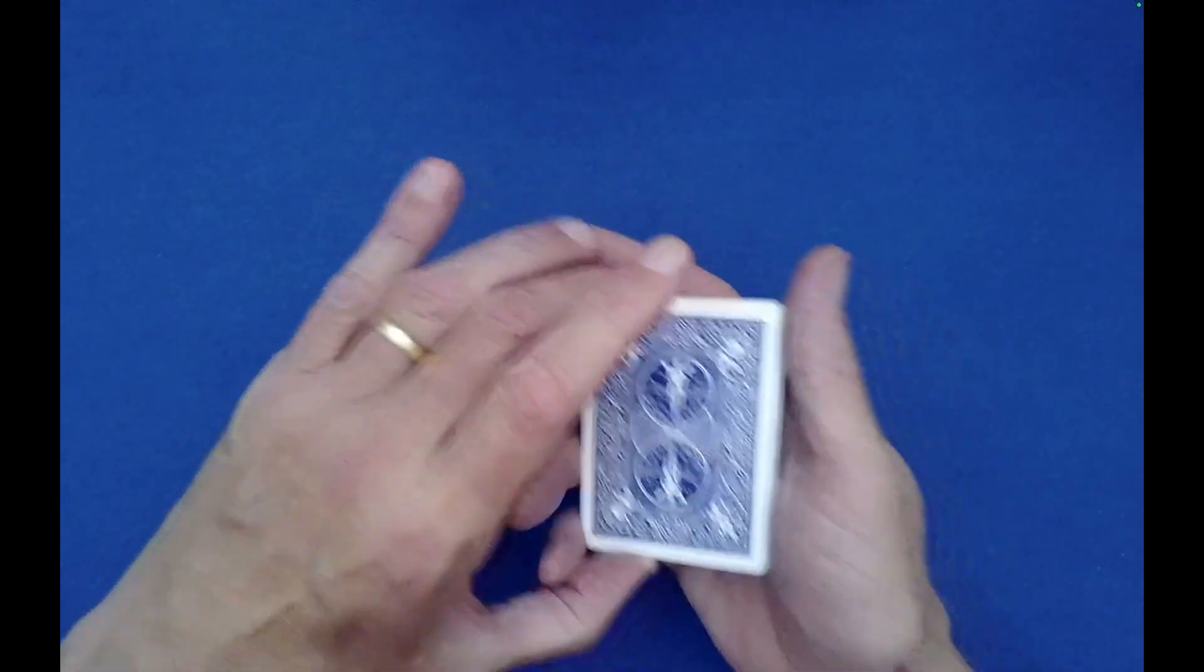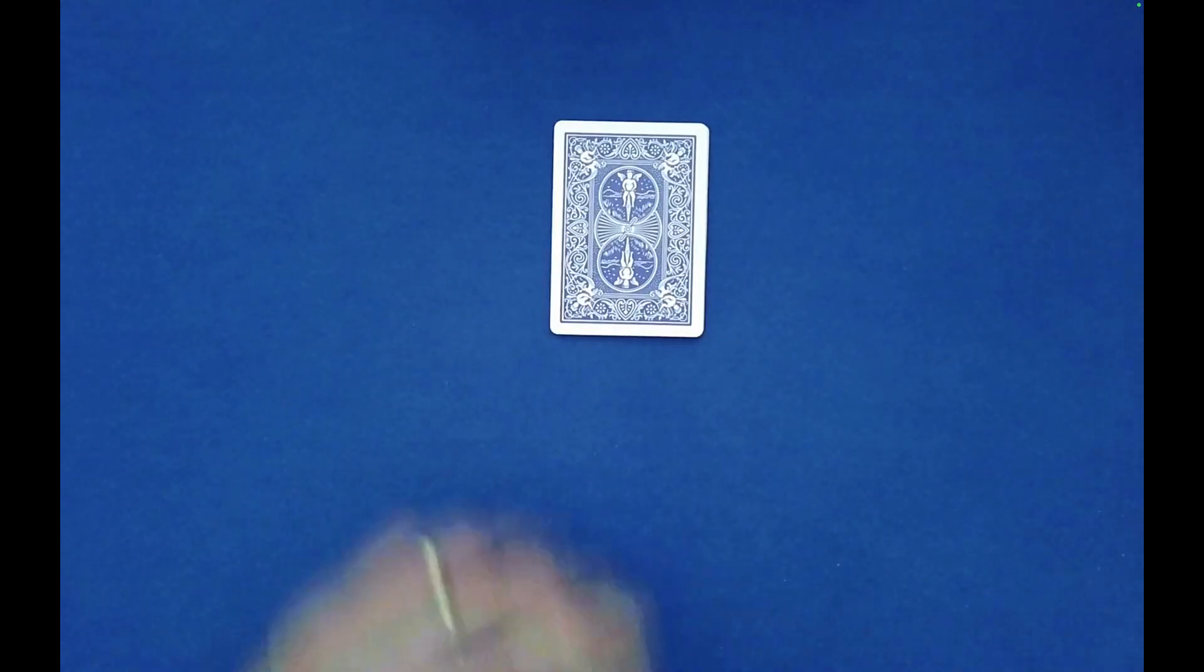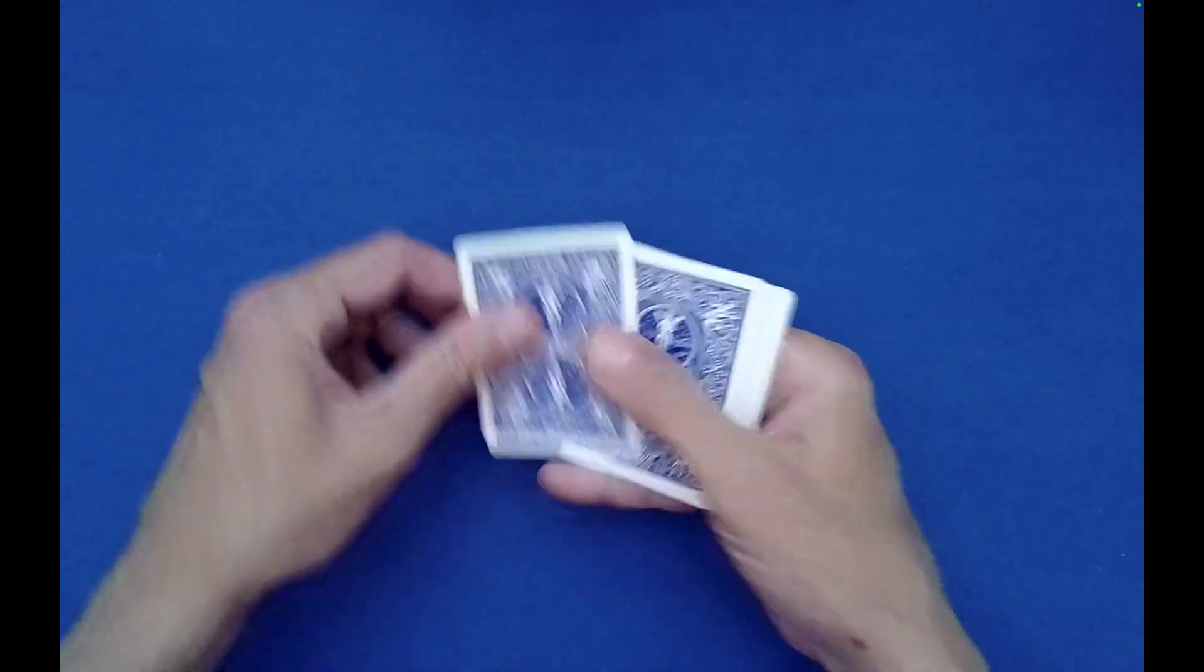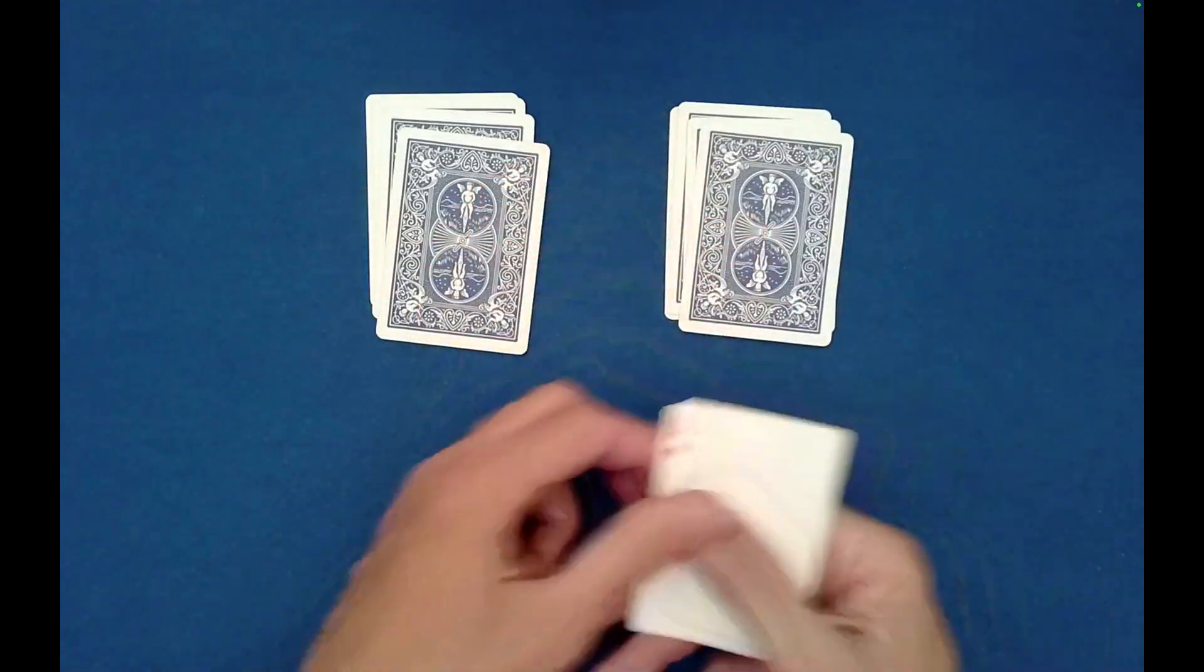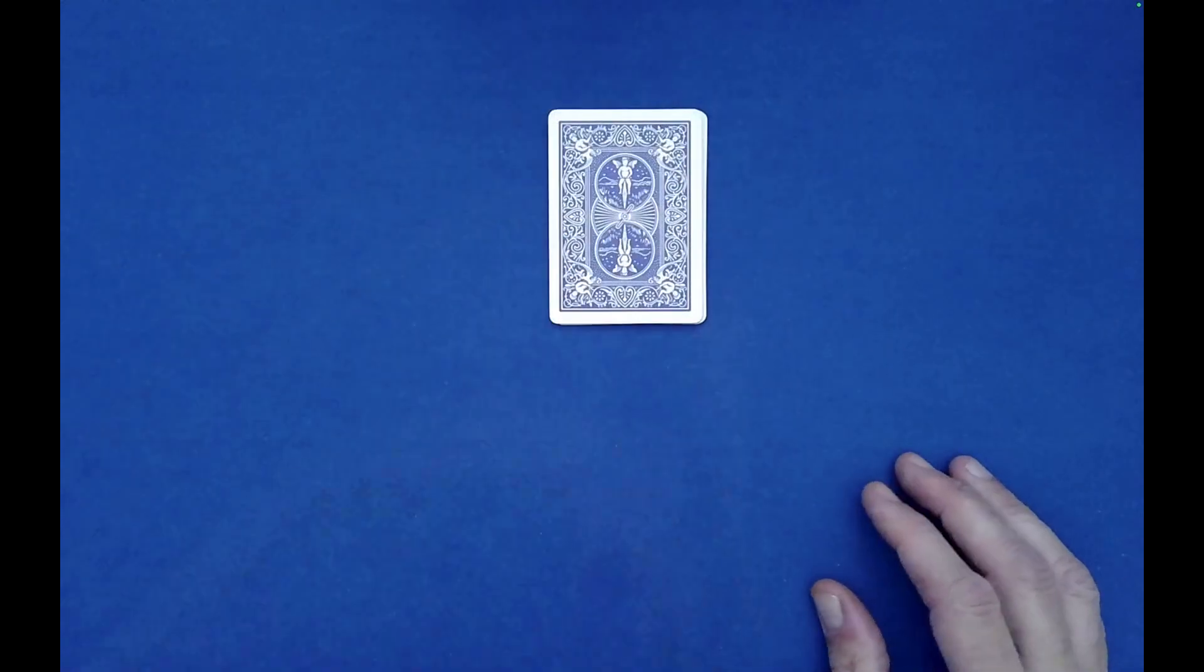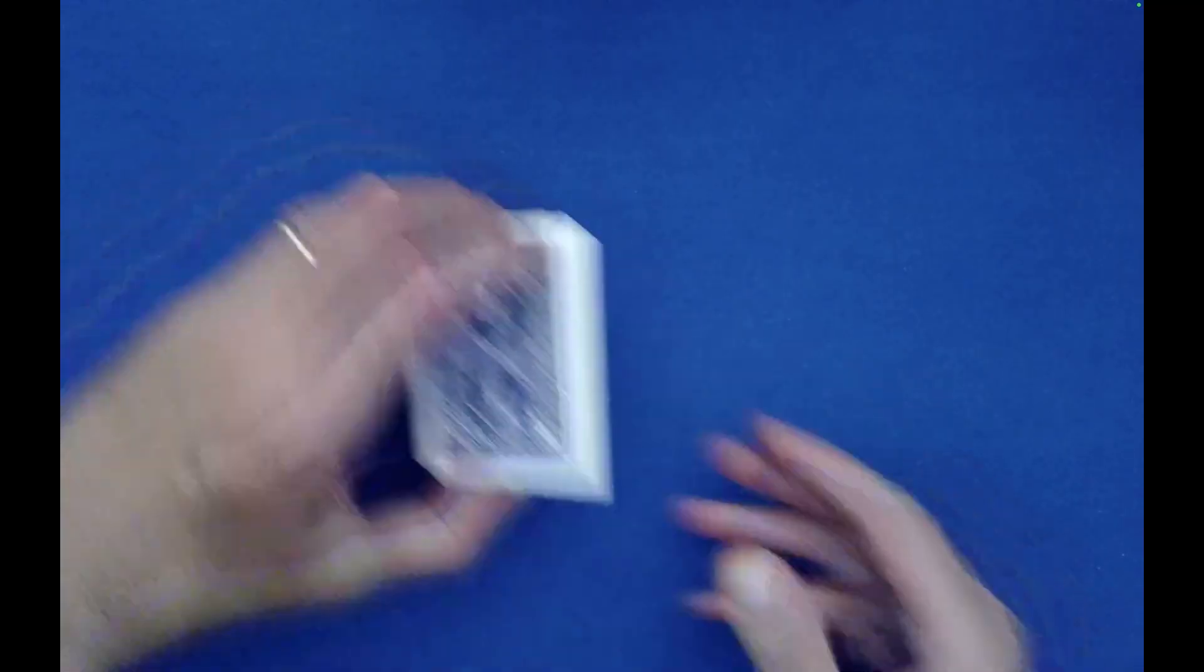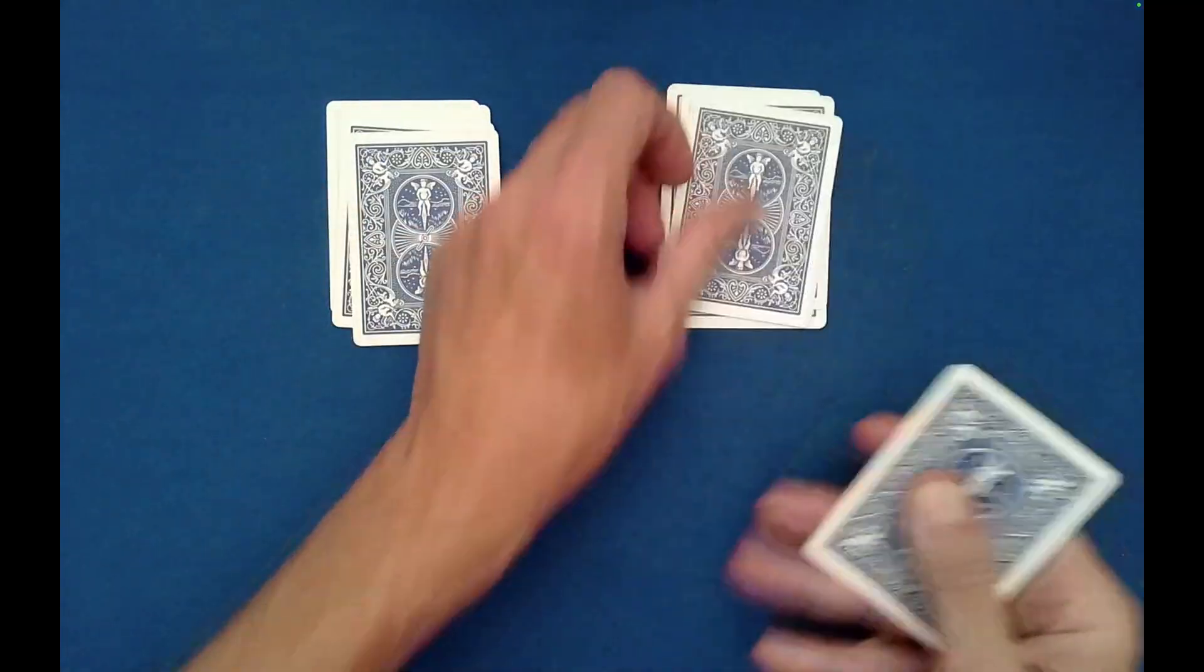Now from here, what you need to do as the performer is simply ask the spectator to randomly cut the packet wherever they would like and complete the cut. Then deal out the cards into two piles and have the spectator decide how to stack the piles, left on right or right on left. Maybe they want right on left. Now have the spectator randomly cut the cards again, complete the cut, then do a second left-right deal with random stacking decided by the spectator. Maybe they want left on right.